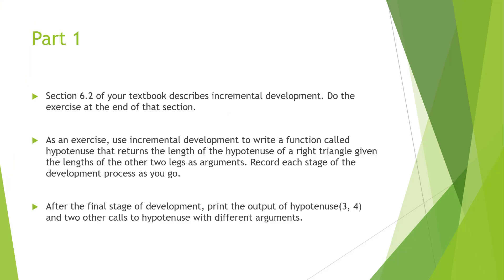This one has a few parts. Part 1: in our textbook, section 6.2 will describe incremental development. Do the exercise at the end of the section. The goal is to be able to increment the development of our code. As an exercise, use incremental development to write a full function called hypotenuse that returns the length of the hypotenuse of a right triangle, taking the lengths of the other two legs as arguments. Record each of these stages of the development as you go.